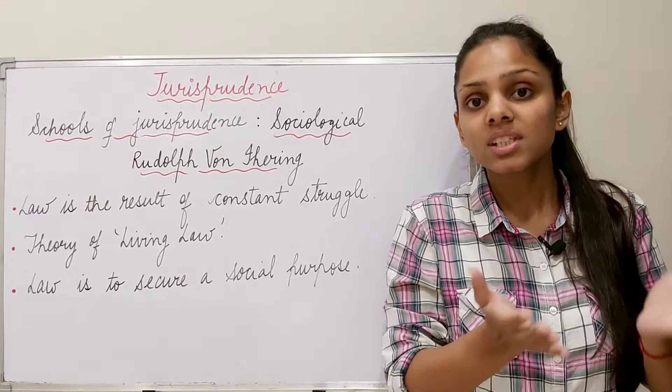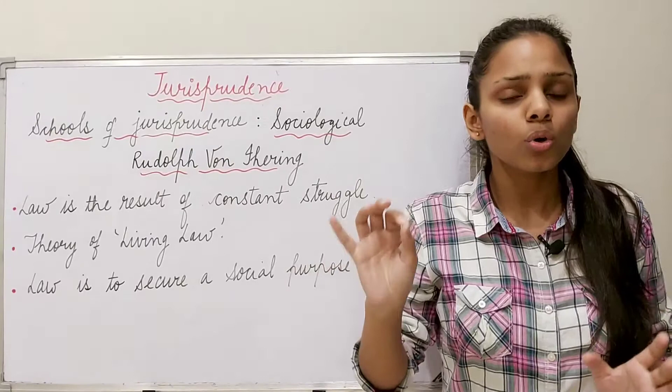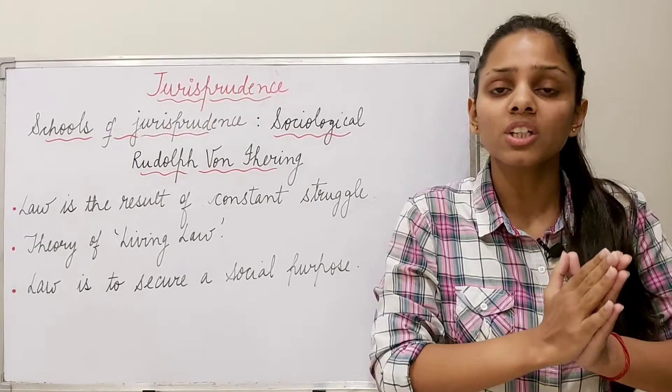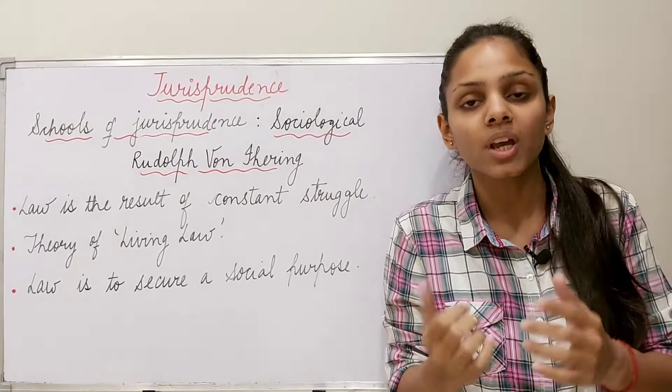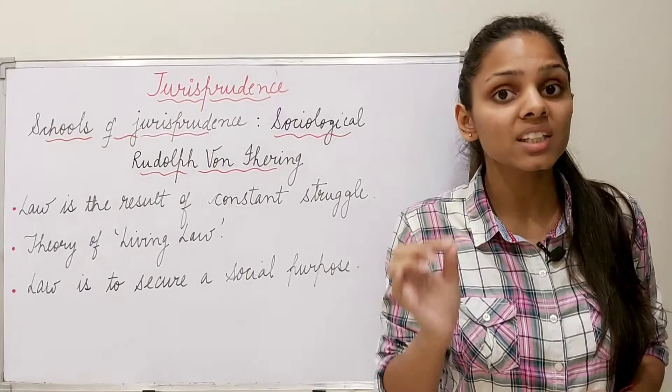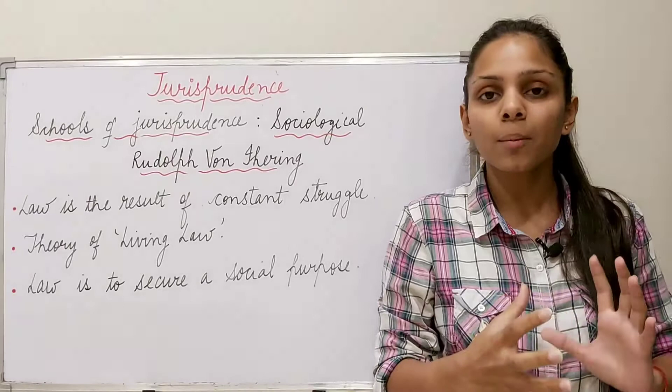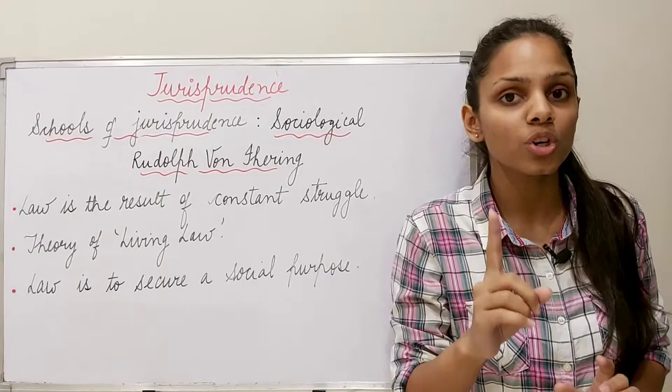He says it is the duty of the state to promote this general will or social will of society as against individual will. He further said that the state can use coercion and force to protect the general will. This means in his theory there is an element of external compulsion — an element of force or coercion — because he justifies the use of coercion and infliction of force upon individuals for the purpose of protection of general interest.